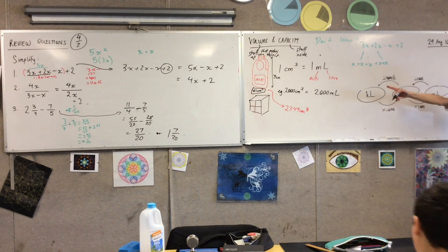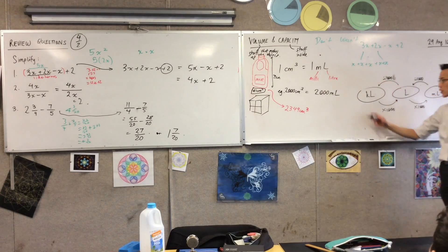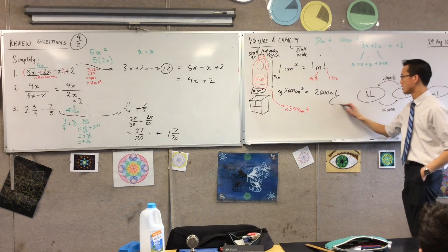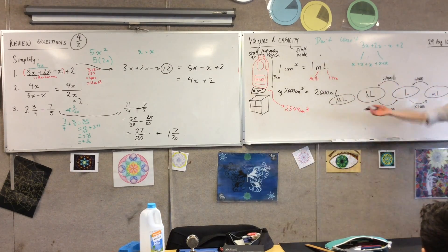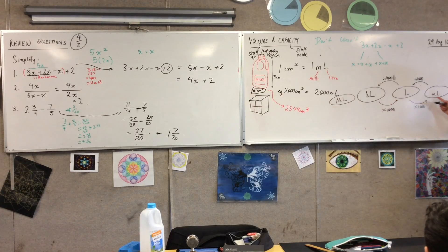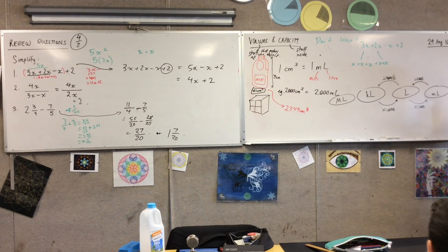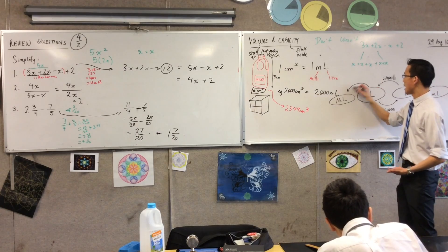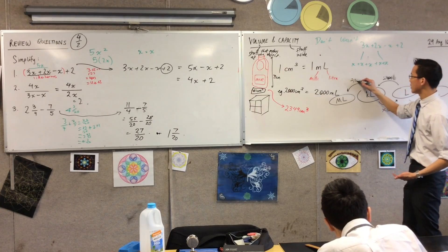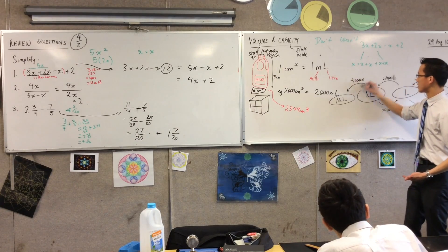There's one more unit at the end — it's not that common. It uses a capital M rather than a lowercase m, which makes it very different. Does anyone know what it stands for? Mega. And again, that's a factor of a thousand.